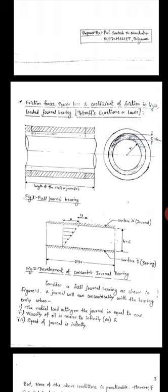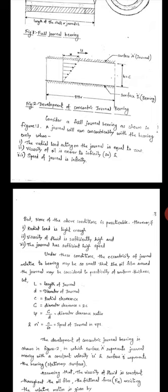Consider a full journal bearing as shown in the figure. The journal will concentrically run with the bearing only when: first, the radial load acting on the journal is equal to zero; second, the viscosity of oil is near infinity; third, speed of the journal is infinity. But none of these above conditions is practical.